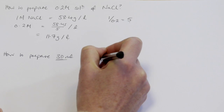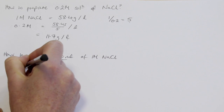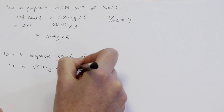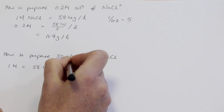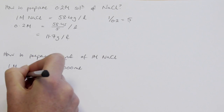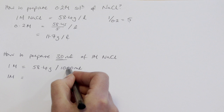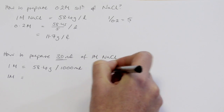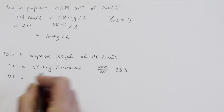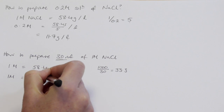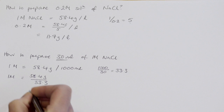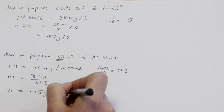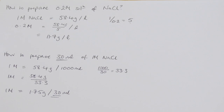How do we prepare 30 mils of a one molar sodium chloride solution? A one molar solution is 58.4 grams in a litre, which we express as a thousand mils. We need to find the factor by which we are scaling down from a thousand mils to 30 mils: 1000 divided by 30 equals 33.3. So I need 58.4 divided by 33.3, which gives 1.75 grams of salt to make 30 mils of a one molar solution.